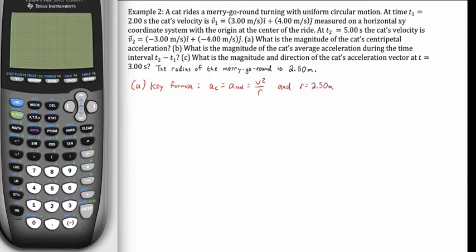For part A, our key formula is that of the scalar value of the centripetal acceleration — the magnitude of the centripetal acceleration, also called the radial acceleration — which is v squared over r. That's just how we calculate centripetal acceleration. We're given r, so we need only find the magnitude of v. The vector magnitude is found with the formula essentially the same as the Pythagorean theorem, which takes the x component of velocity squared and adds the y component squared, all inside the square root to find the length of the hypotenuse.